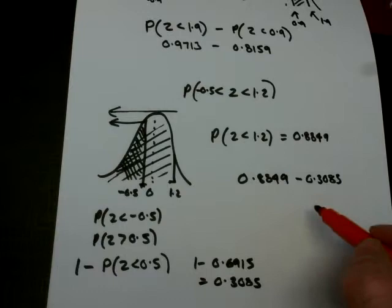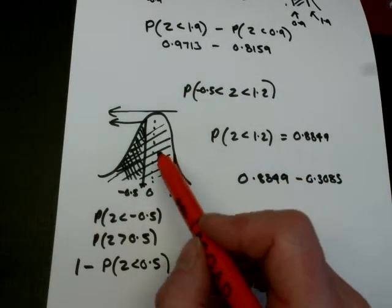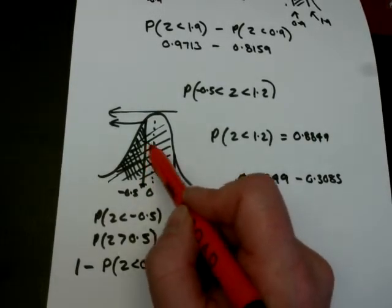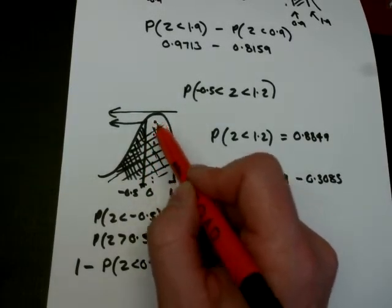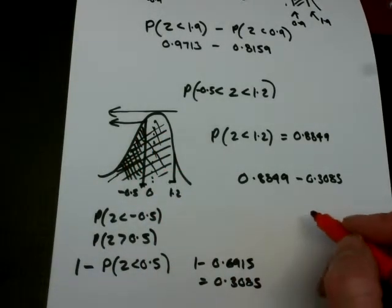And so we end up with an answer around about 0.5, and if we look back at our diagram, it's reasonably well drawn. And this area I'm sketching now looks to take up about half of the entire area, so the area, the answer looks about right.